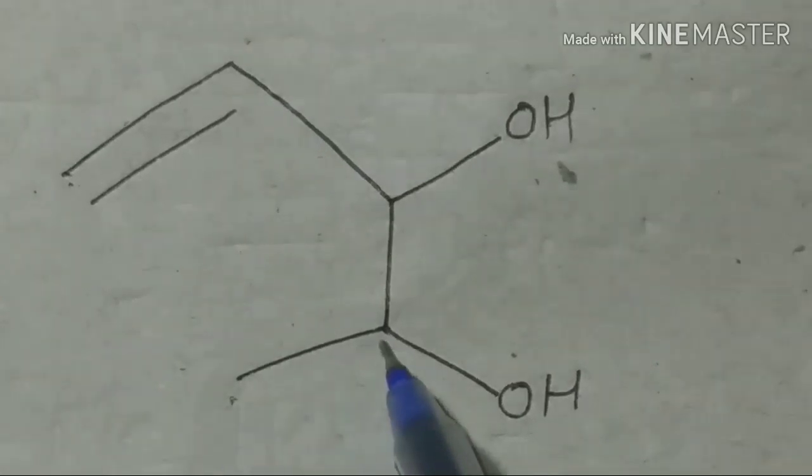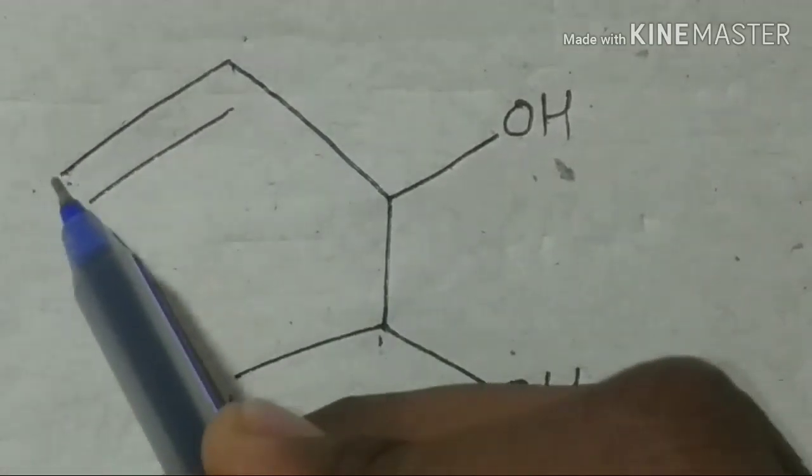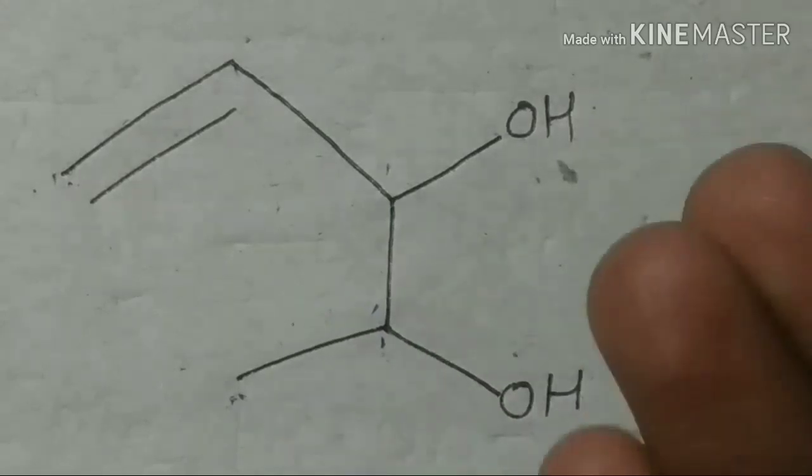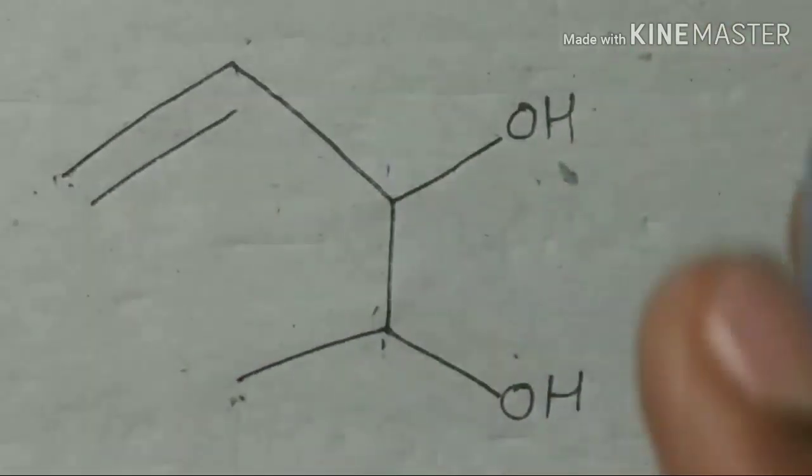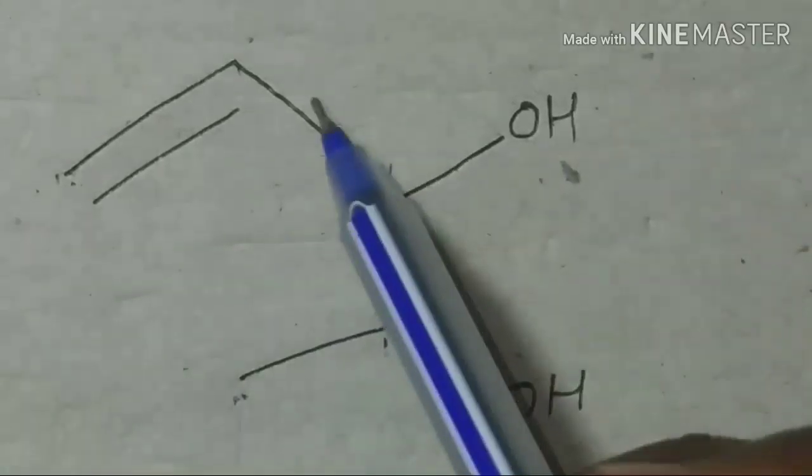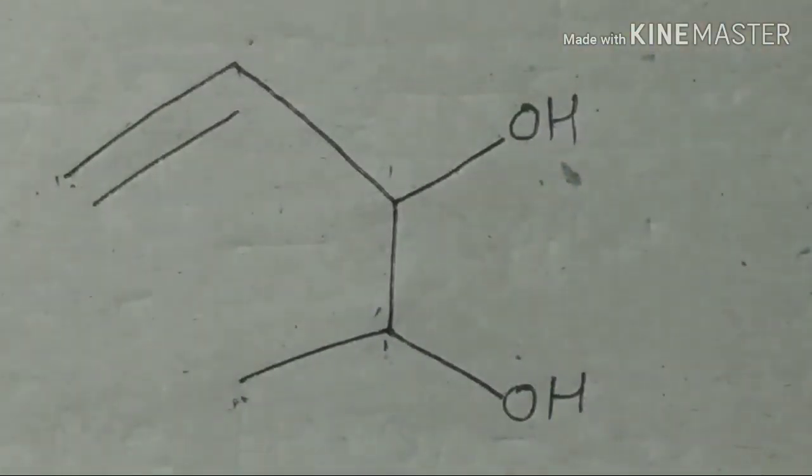Look at this. One, two, three, four, five. Five carbon chain. One, two, three, four, five. So we will also have five carbon chains. Now we will keep this in mind. Where we have functional group, where we have functional group.